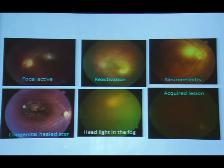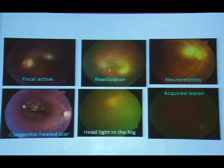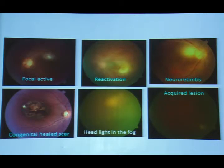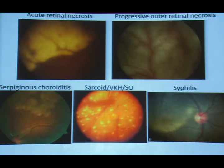Some diseases in uveitis are very characteristic. Focal active retinal inflammation with reactivation of an old scar, neuroretinitis with the Kyrieleis arteriolitis pattern, a congenital healed scar with a headlight-in-the-fog appearance, and focal retinitis without pigmentary alterations are all seen in toxoplasma chorioretinitis, one of the most common causes of infectious retinitis.